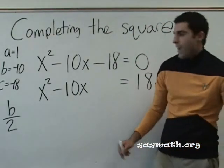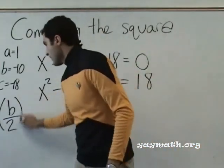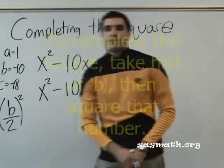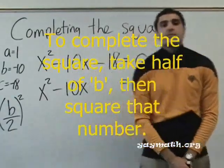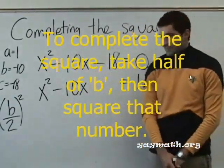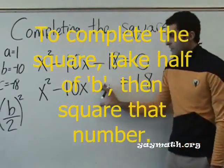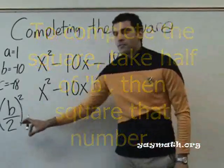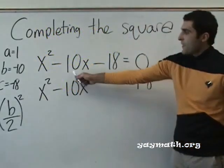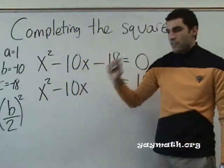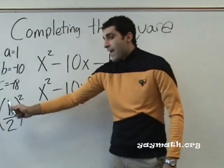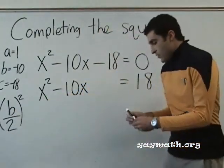So you take B and half it, we get negative 5. Then you take that number, negative 5, and you square it. So... 25. 25. Right. Every time, this thing here, this number, will be B over 2 squared. So, we take B, negative 10 divided by 2, that's negative 5, negative 5 squared, 25. So we add 25 now.